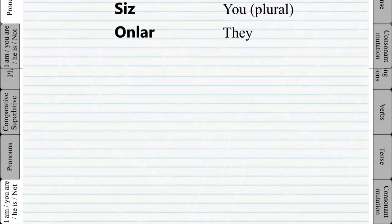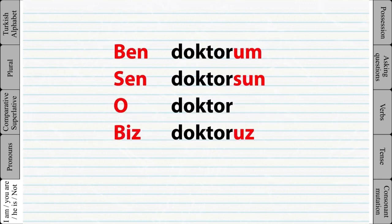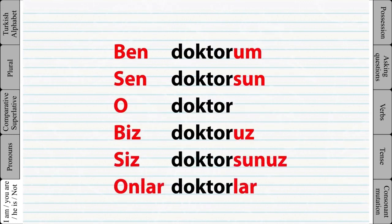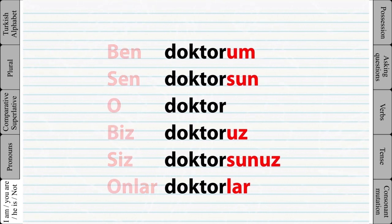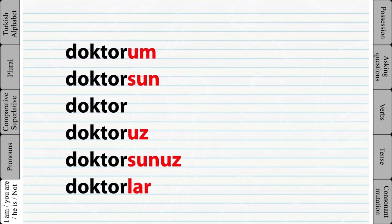For example: 'I am a doctor.' The personal ending for the pronoun 'I' is this. Because every personal ending is different, it is possible to omit the subject pronoun and keep the personal endings only. Let's look at another example.